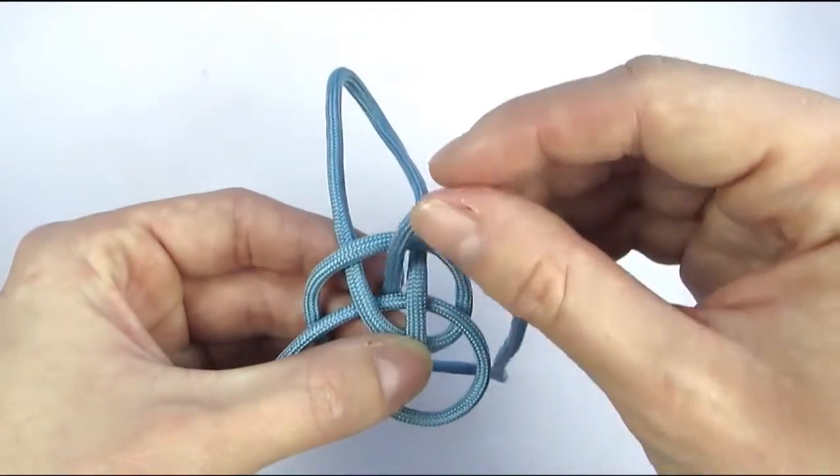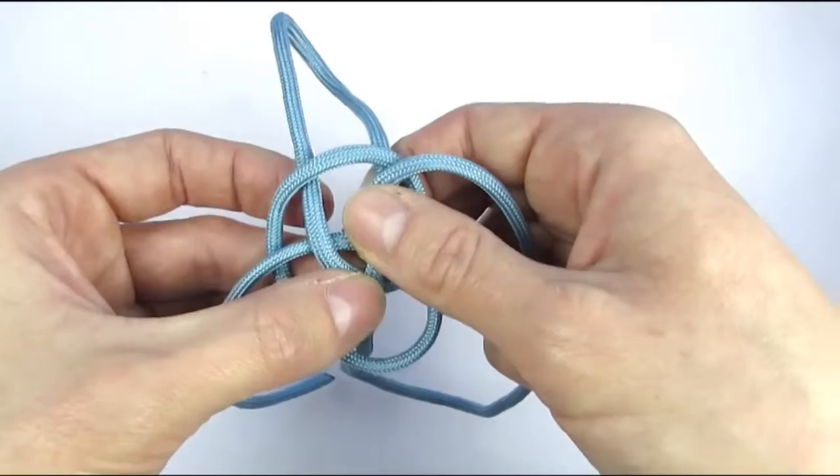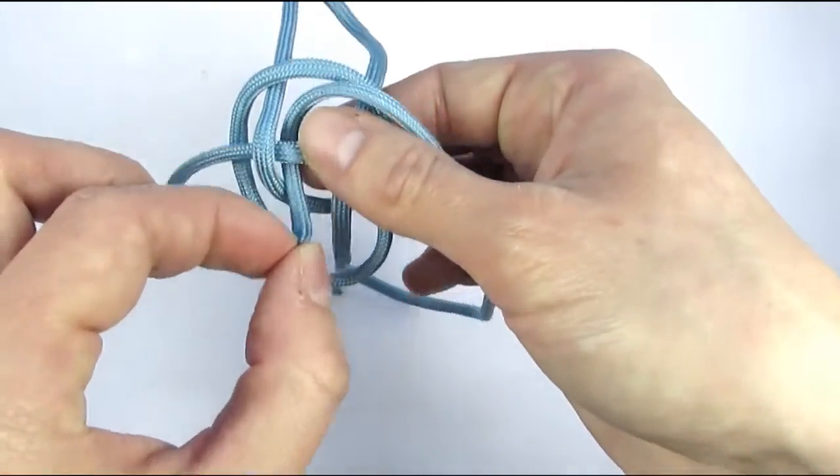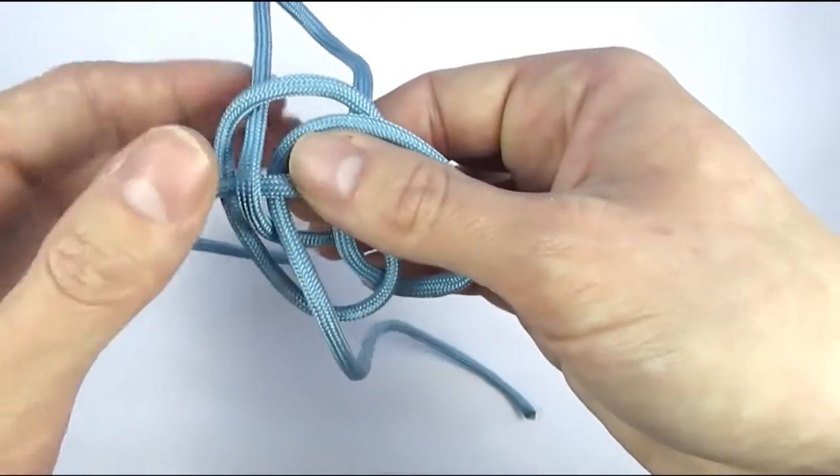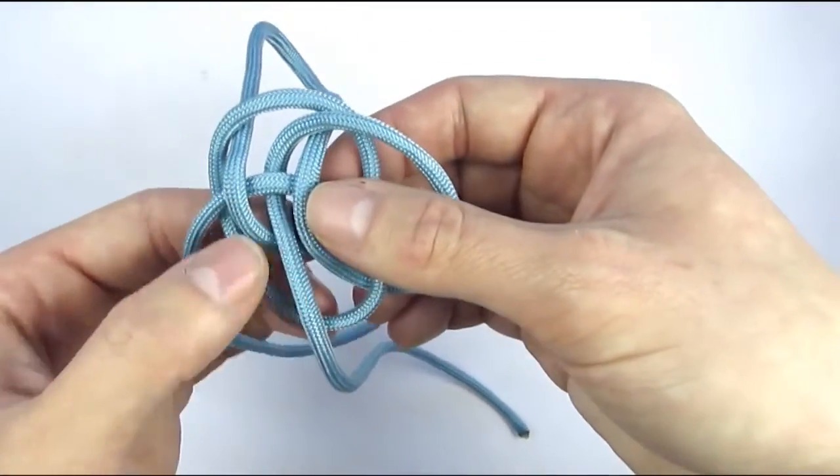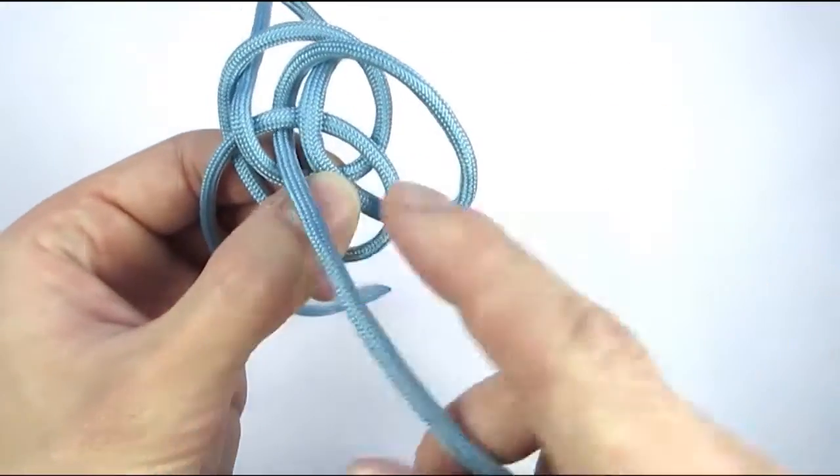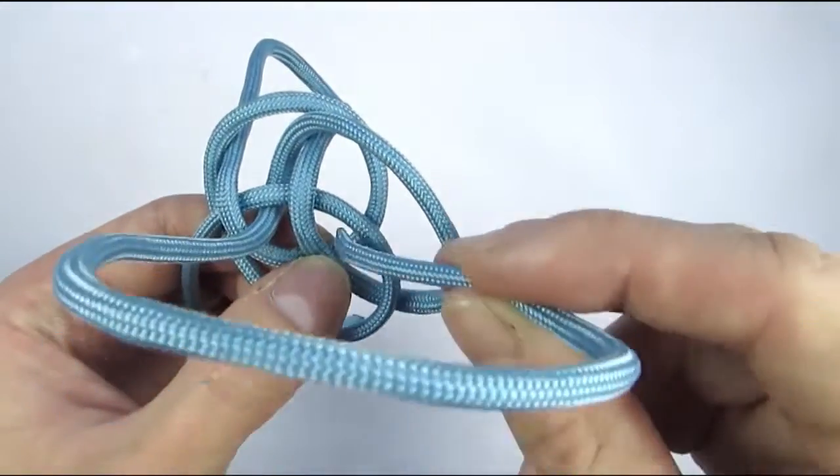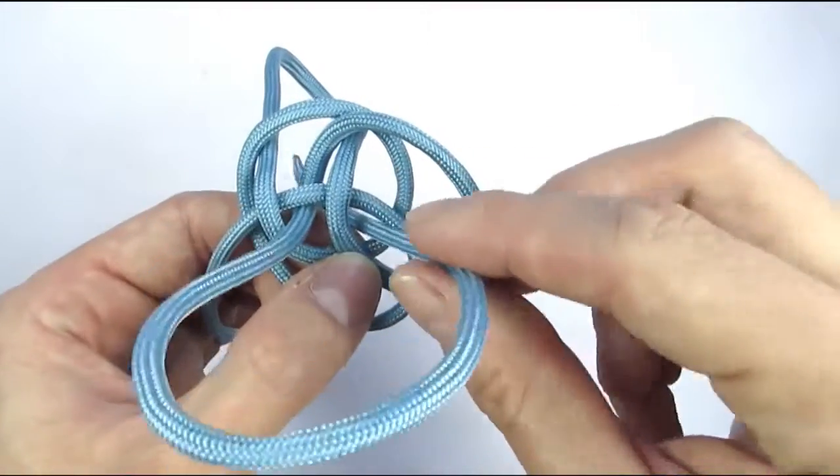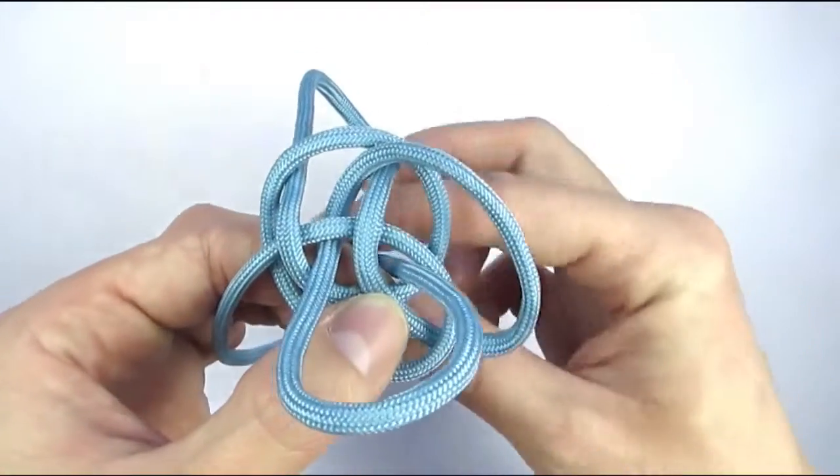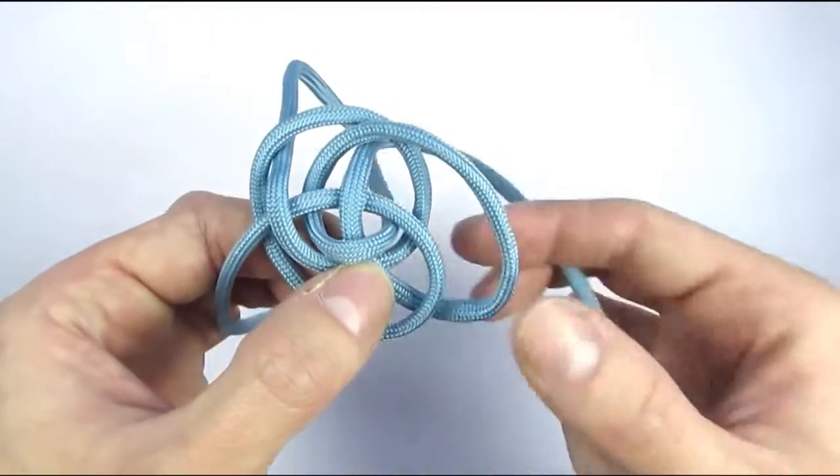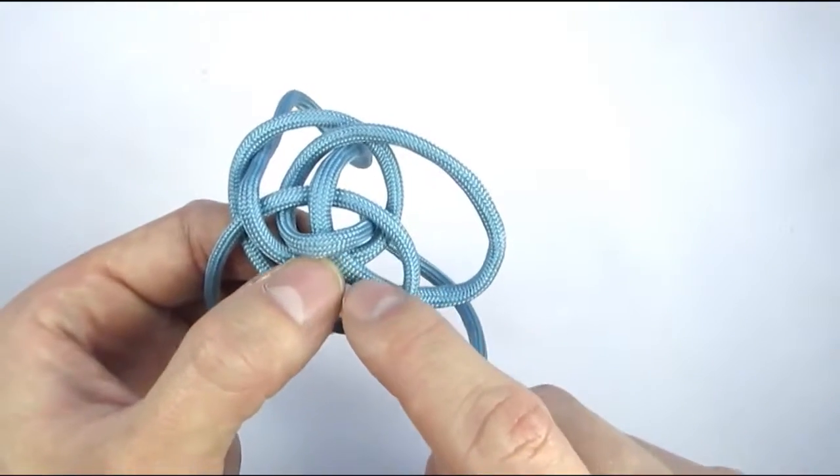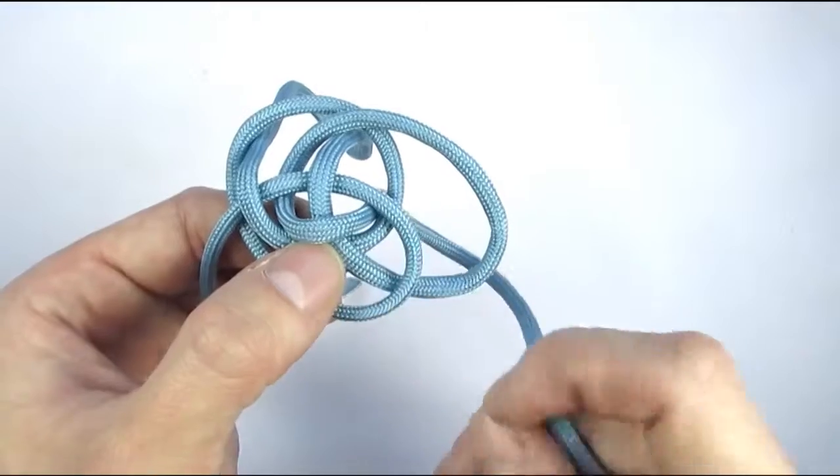Then we're going to fold over this cord here because the cords are going under it. We're then going to go under because there are two parallel cords going over here, so we're going to go under.